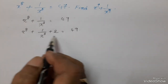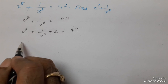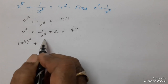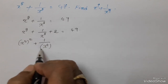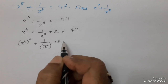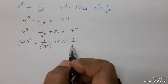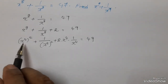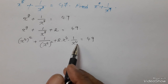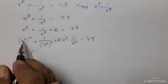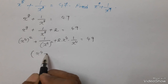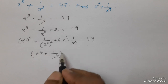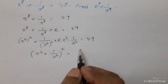Now write the left side in perfect square form: x power 4 whole square plus 1 by x power 4 whole square plus 2 into x power 4 into 1 by x power 4, equal to 49. This is the a square plus b square plus 2ab form, where a equals x power 4 and b equals 1 by x power 4. So x power 4 plus 1 by x power 4 whole square equals 49.